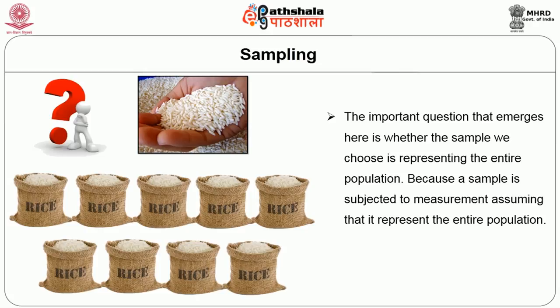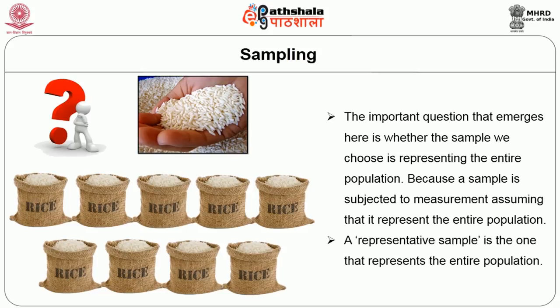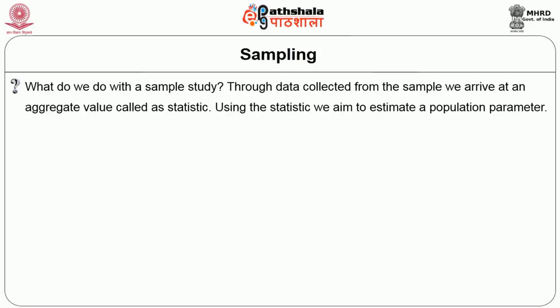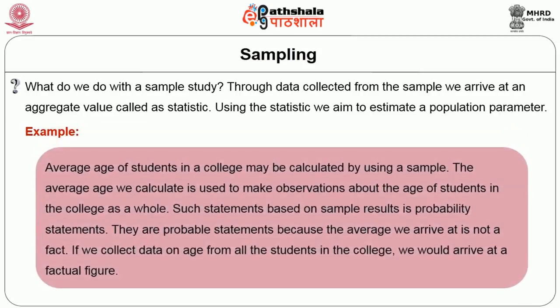A sample is subjected to measurement assuming that it represents the entire population. A representative sample is one that represents the entire population. Through data collected from the sample, we arrive at an aggregate value called a statistic. Using the statistic, we aim to estimate a population parameter. For example, the average age of students in a college may be calculated using a sample, and that average is then used to make observations about the age of students in the college as a whole. Such a statement based on sample results is a probability statement.